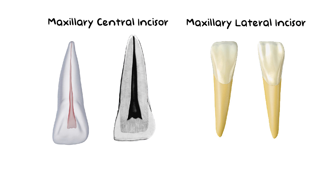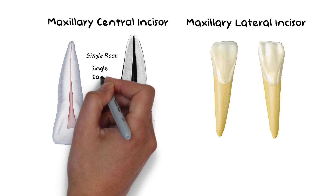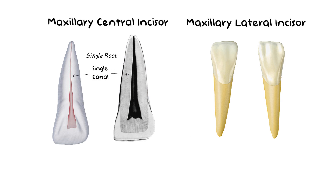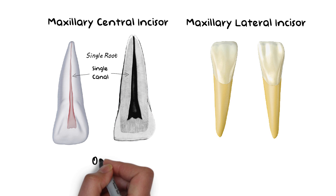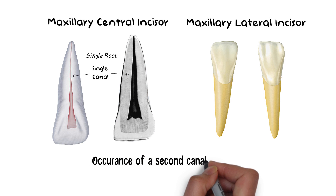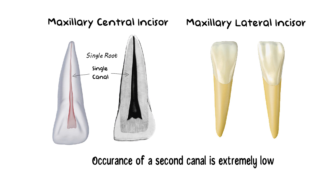Maxillary central and lateral incisors most of the time have one root and one canal. The occurrence of two canals in either of them is extremely low. Although if we compare the two, the lateral incisor may have a slightly higher chance of having two canals as compared to the central incisor, even though that is also extremely low.